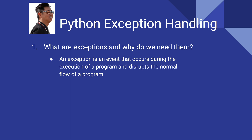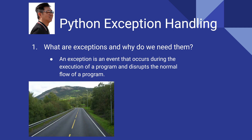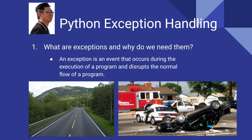An exception is an event that occurs during the execution of a program and disrupts the normal flow of a program. The problem is that if an error happens by an accident, the problem will be even worse. Programming changes the progress of a program, and handling these errors is extremely important.